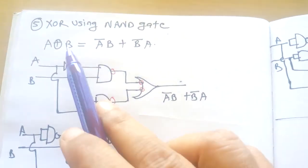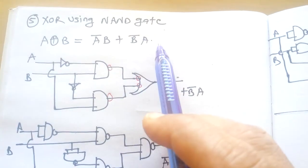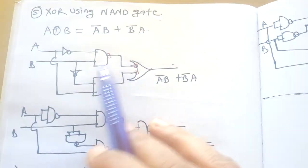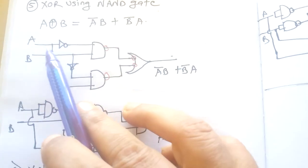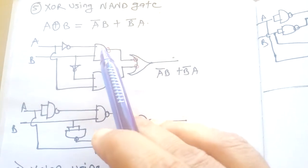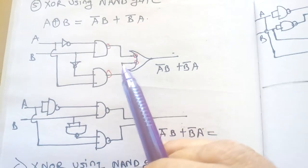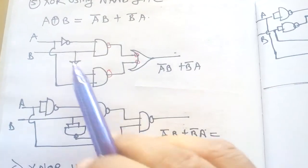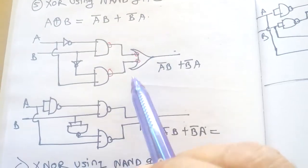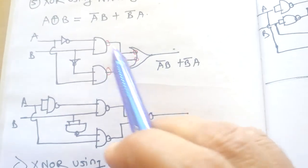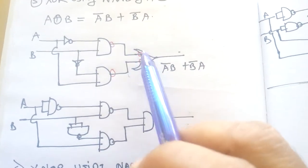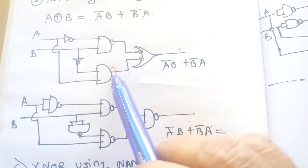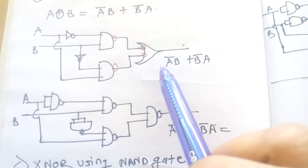Now let us construct the XOR gate using NAND gates. XOR is defined as A XOR B equals A bar·B plus B bar·A. First, draw A bar·B — a NOT gate on A, then AND with B. Then draw B bar·A — a NOT gate on B, then AND with A. Finally, an OR gate combines both. Only look at the black diagram for now, ignoring the red dots.